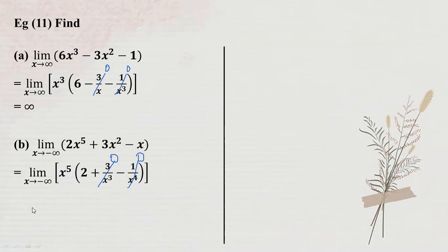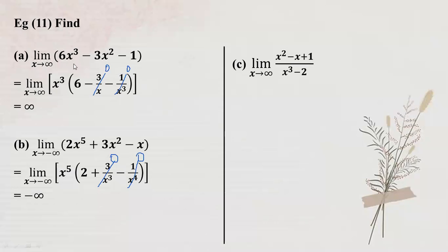In this video we will see the minor infinity of the problem. Let's look at: limit of (x² minus x plus 1) divided by (x² minus 2) as x tends to infinity.